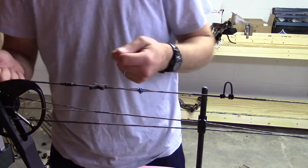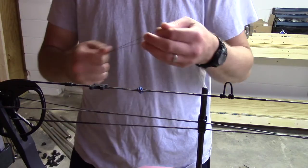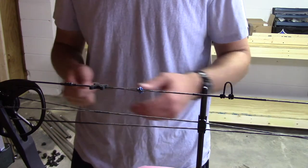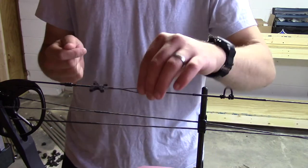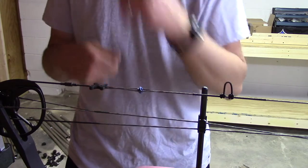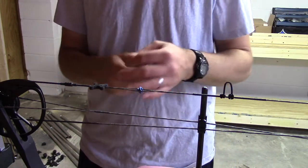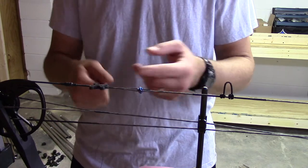If you get new strings, and you have the old strings, keep the old strings. If you don't want to buy any kind of serving or anything, you're only going to tie in maybe one peep sight or a string silencer or two, and you're not going to do that for another couple of years. Just take that old string that you salvaged, and cut everything off in between the serving pieces,